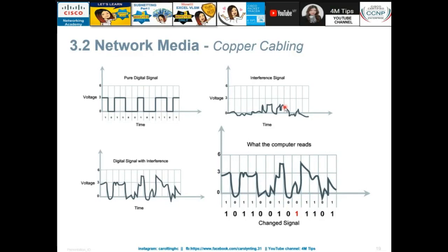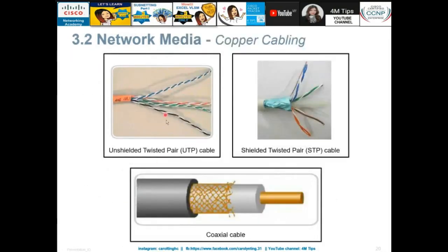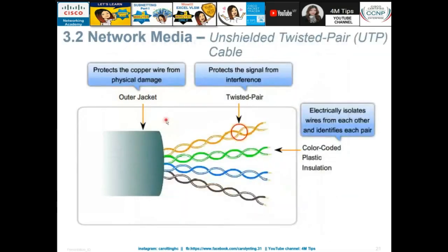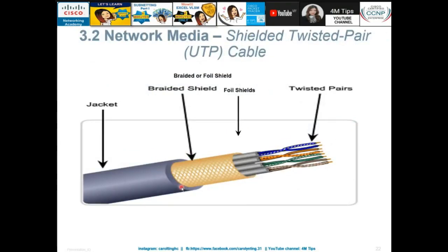Interference can distort the digital signal — where it should read zero, the signal changes unexpectedly. That is why copper cabling is cheap but only supports short distances. If you want to connect between cities, do not use copper cable. The unshielded twisted pair (UTP) architecture twists the wires together to protect from interference and noise.